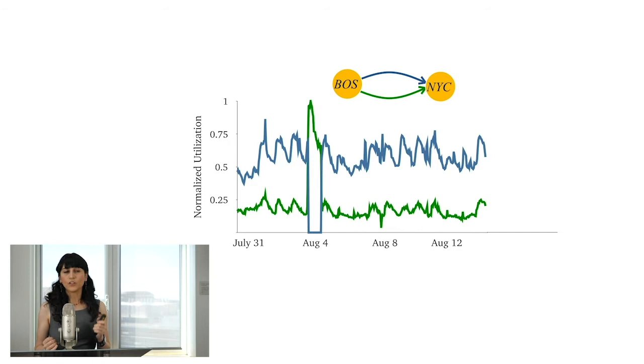The interesting thing is if you look at the traffic around the year, through the rest of the year, this is the only failure event that happened. And the bottom link is operating at roughly 25% of its utilization most of the time. And this is where we want to take advantage of this. By knowing the probability of these failure events, bad events, the question is can we do better or not?